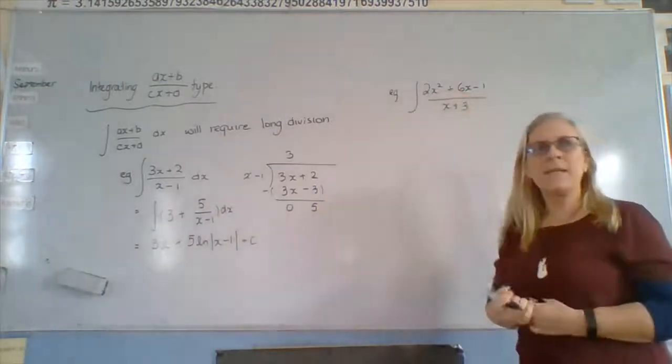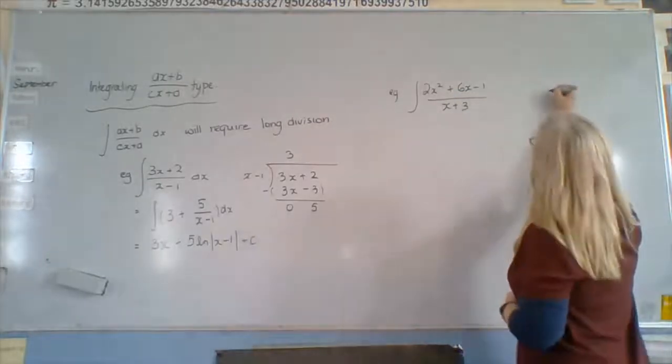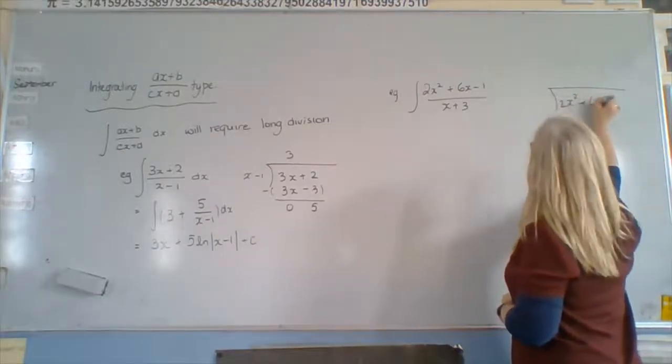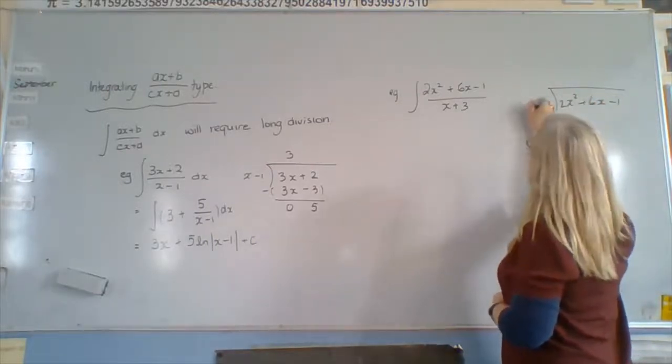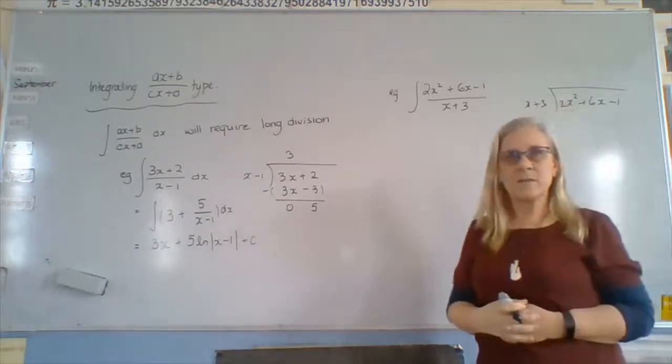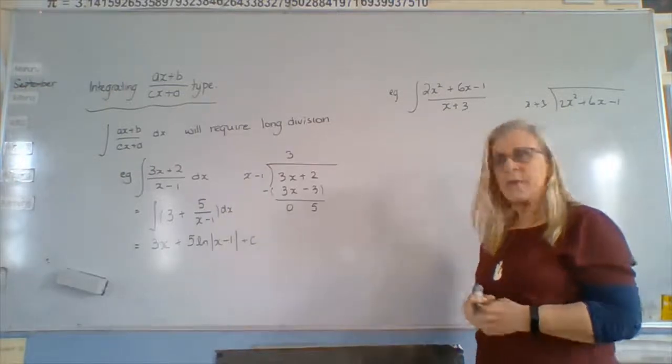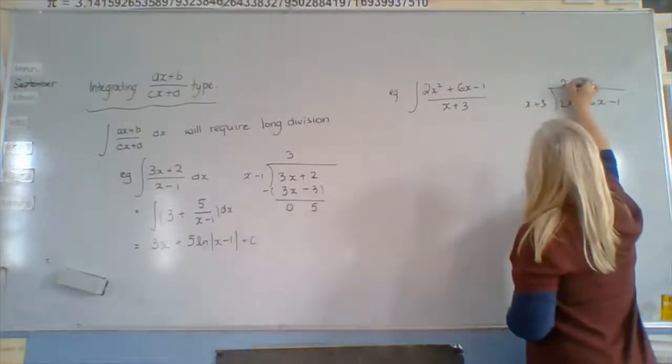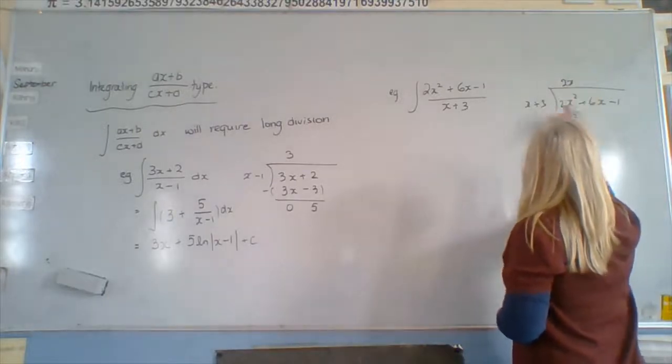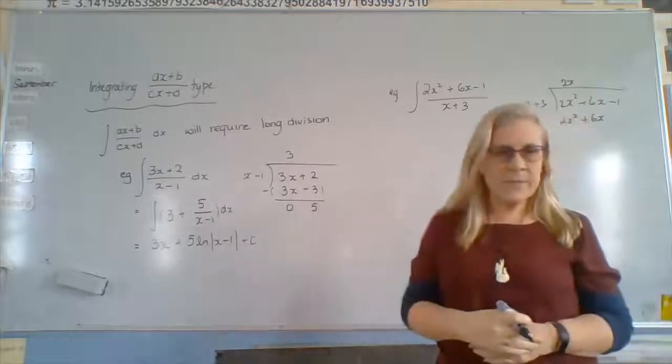So this one here, again, going through this process. All right. So we've got 2x squared plus 6x minus 1 divided by x plus 3. What do we multiply this by to get that? 2x, correct. 2x times x is 2x squared. 2x times 3 is plus 6x. Correct?